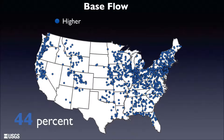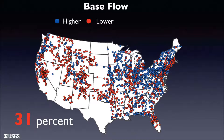About a third of the streams we assessed had lower than natural base flows. These occurred throughout the country but were especially prominent out west, where we have a lot of groundwater pumping and a lot of diversions for a variety of purposes, associated with intensive agriculture, urbanization, and related structures.